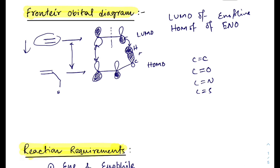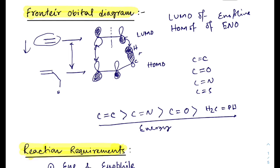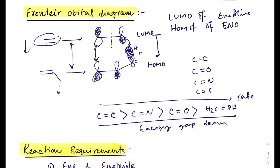Therefore there will be a good interaction and the reaction will be more favorable. If we alter the enophile from C=C to C=N, the energy gap decreases; for C=O it decreases more; and in case of C=O with phenyl the gap decreases further. From right to left the energy gap decreases, so from left to right the reaction rate increases.